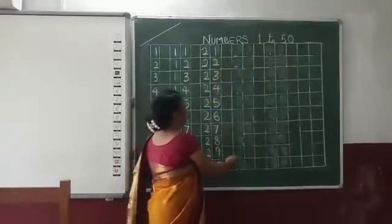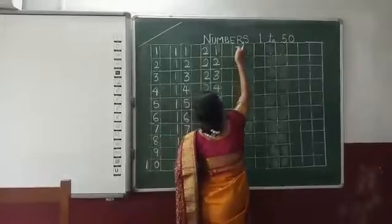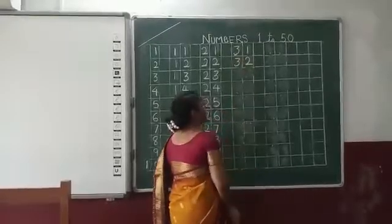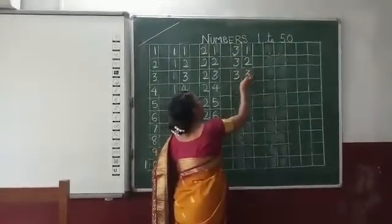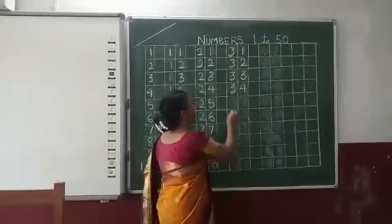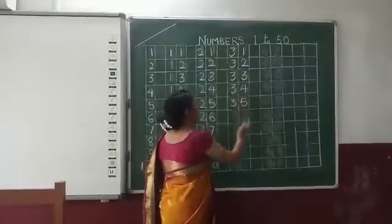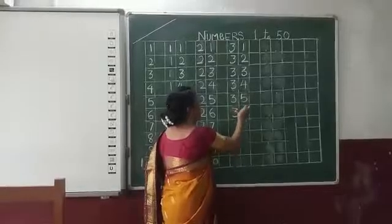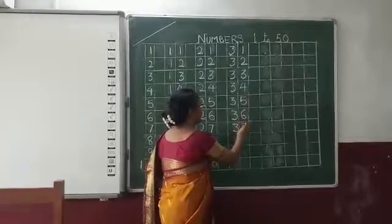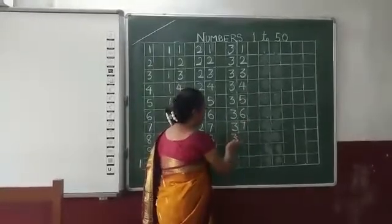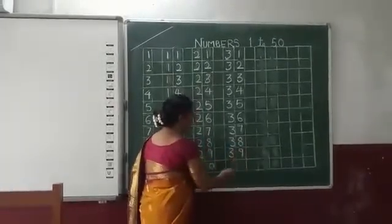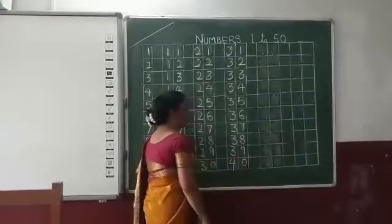Again leave one line in between and start 31. 3, 1, 31. 3, 2, 32. 3, 3, 33. 3, 4, 34. 3, 5, 35. 3, 6, 36. 3, 7, 37. 3, 8, 38. 3, 9, 39. 4, 0, 40.